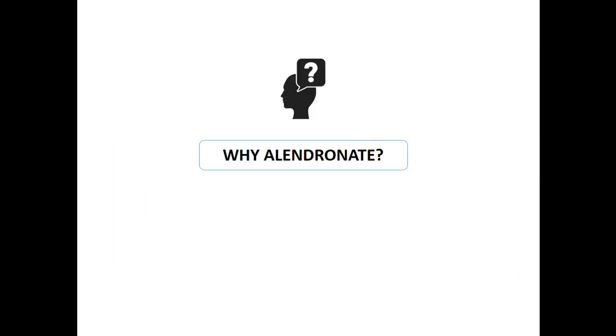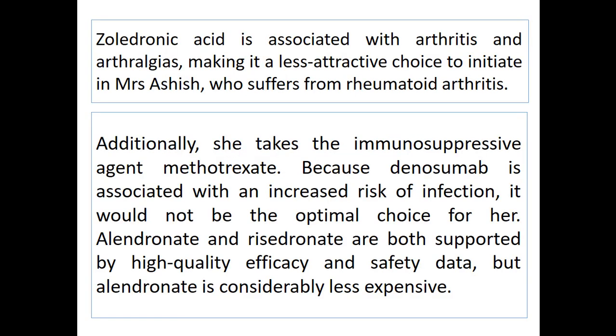Why use alendronate when other medications are available? Zoledronic acid is associated with arthritis and arthralgias, making it a less attractive choice for Mrs. Ashish who has rheumatoid arthritis. She is also taking an immunosuppressive agent, methotrexate, and denosumab interacts with an increased risk of infection. Both alendronate and risedronate are high-quality, high-efficacy medicines, but alendronate has been favored in cost-effectiveness studies.